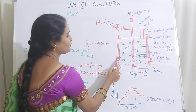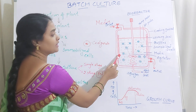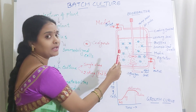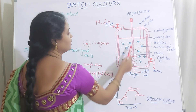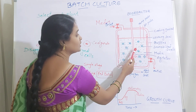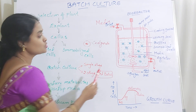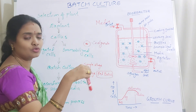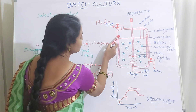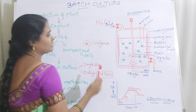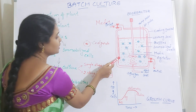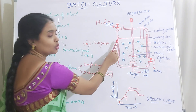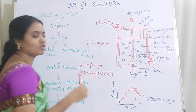Inside the bioreactor, you have baffles which avoid vortex formation. A vortex will form when the agitator or impeller is rotating — the motor connected to it rotates to mix all the media and cells, and during that mixing there may be formation of a vortex, just like when you swirl a glass of water with a spoon. The cells may get adhered to the sides and not be involved in the culture process. The baffles push all the media and cells inward, and will not allow them to get collected towards the corners or at the tips.